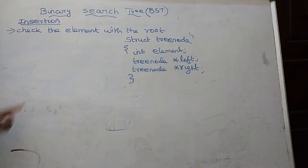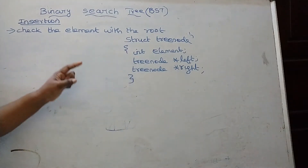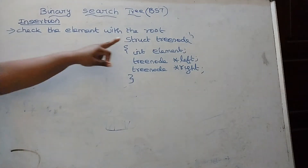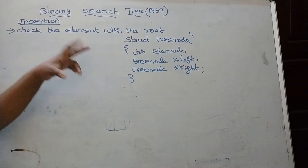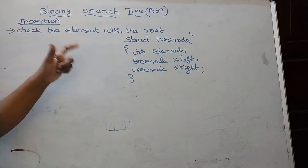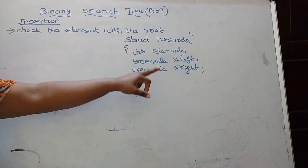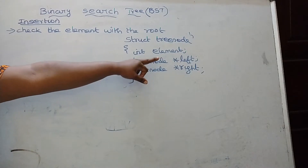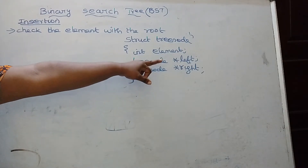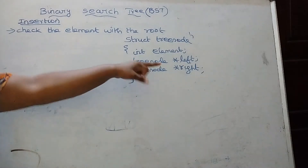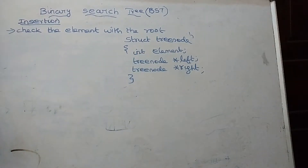This is the node declaration for the binary search tree: struct tree node. Every node will have three parts — one is the element part, one part will have the address of the left child, and the other part will have the address of the right child.